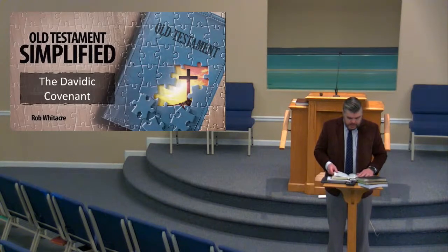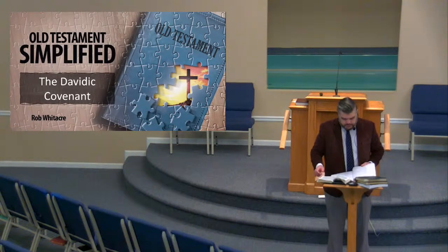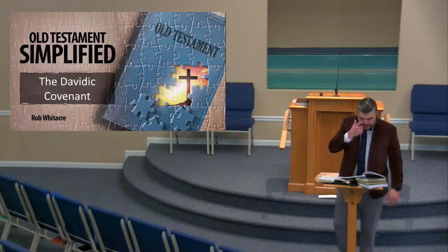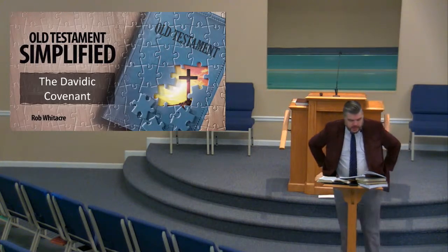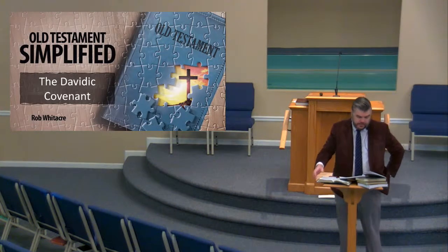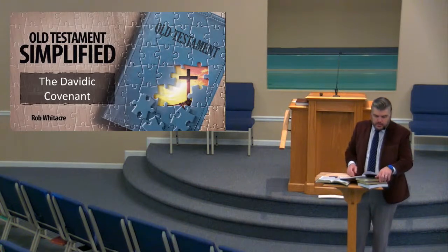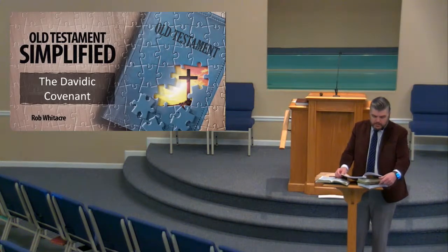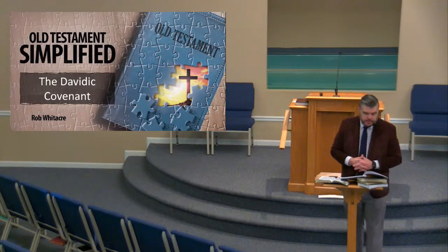When you think about 1 Samuel, we're looking at 31 chapters. And then you look at 2 Samuel, and we're looking at 24 chapters. We're trying to cover a great deal of runway here, but we're doing it in a short period of time, all under the concept of the Old Testament Simplified. We look at these two books from an importance perspective as well as just a content perspective.